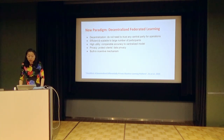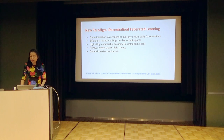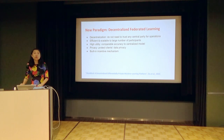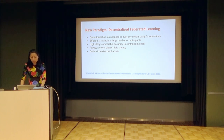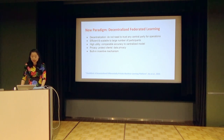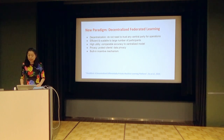Using this new paradigm, we achieve a number of advantages. We enable decentralization so we don't need to trust any central party for the operations. It's much more efficient and can scale to a large number of participants compared to the peer-to-peer solution. We can achieve very high utility — essentially the accuracy can be comparable to the centralized model. We achieve strong privacy to protect the client's data privacy. And by using a blockchain smart contract platform, we have a pretty incentive mechanism.